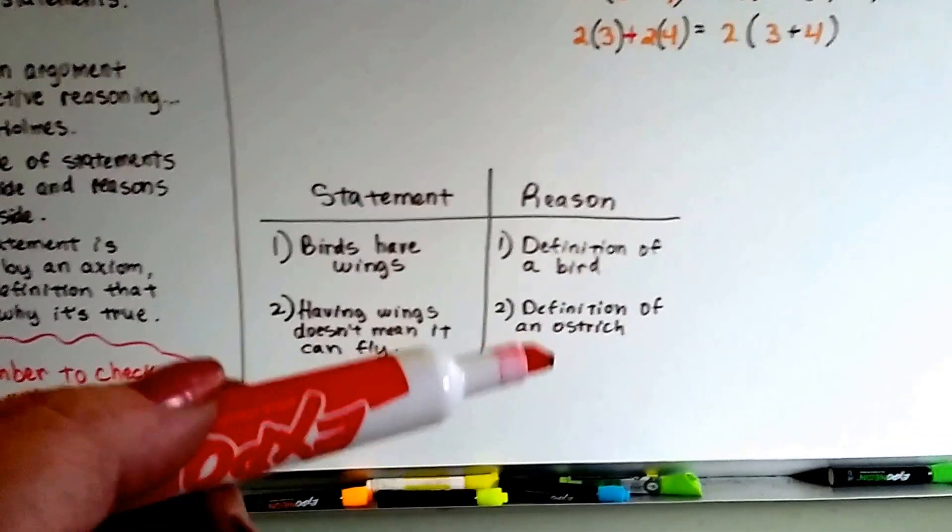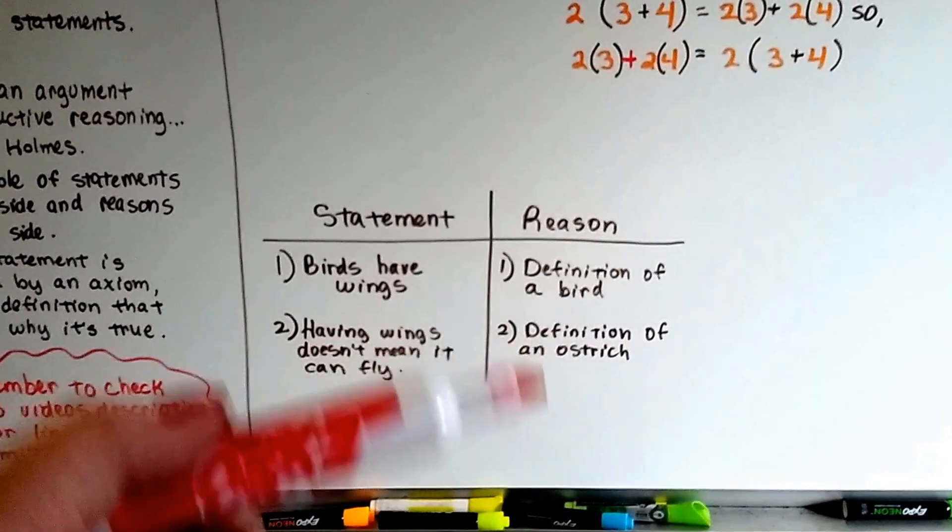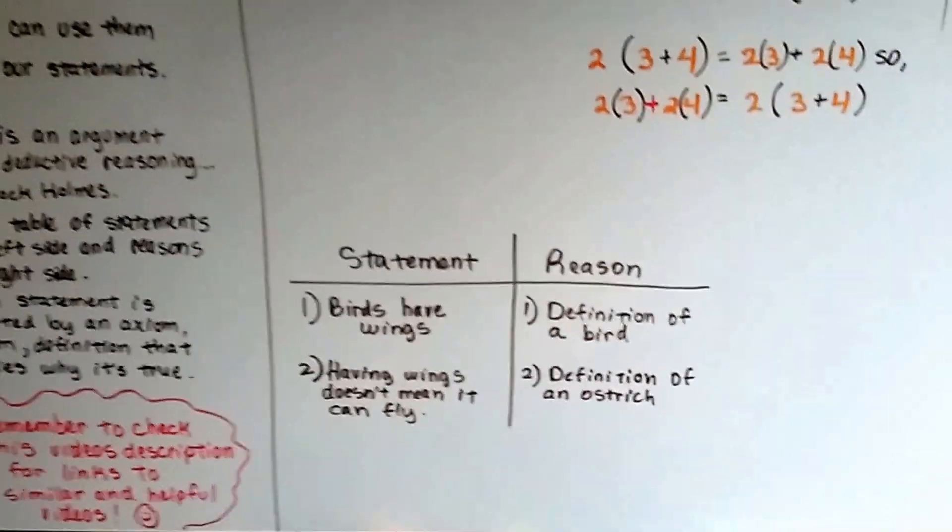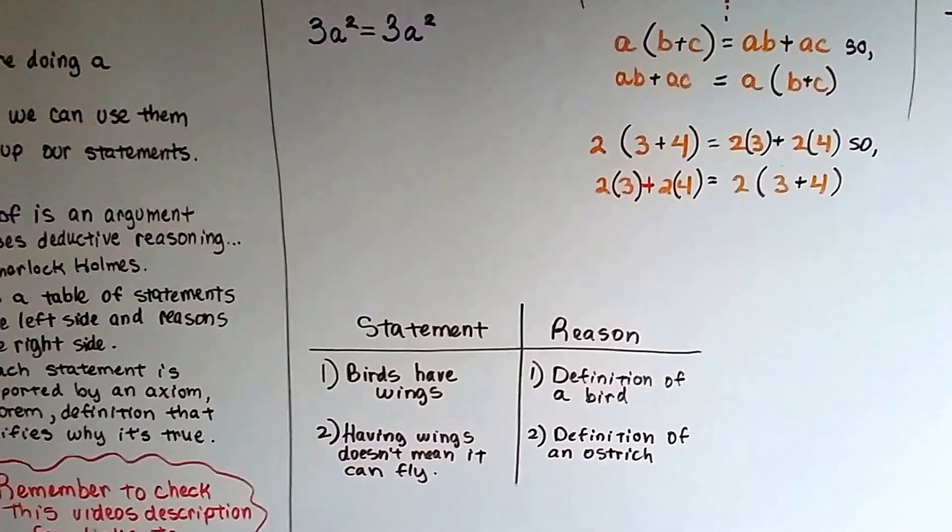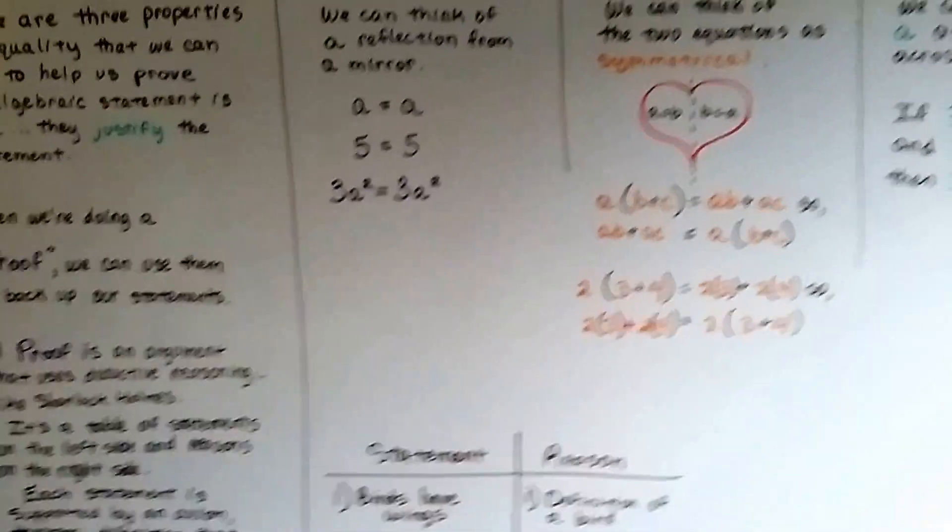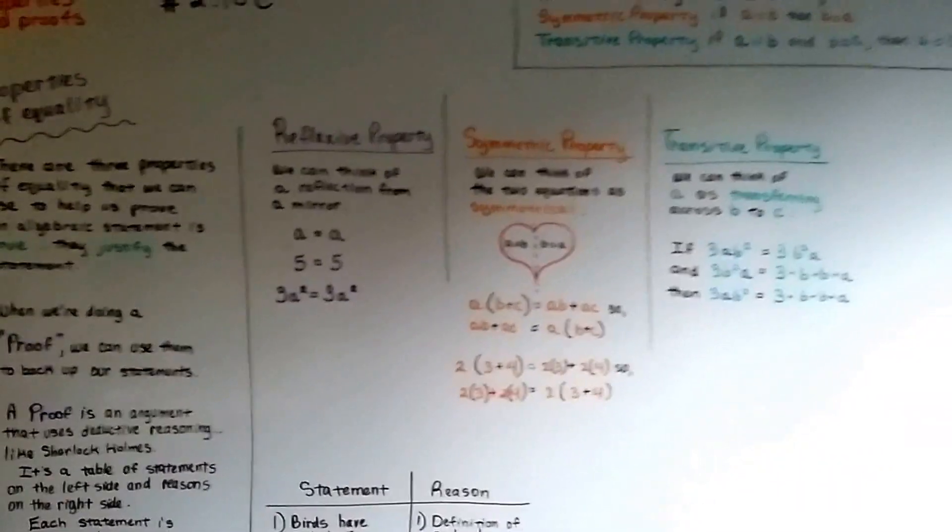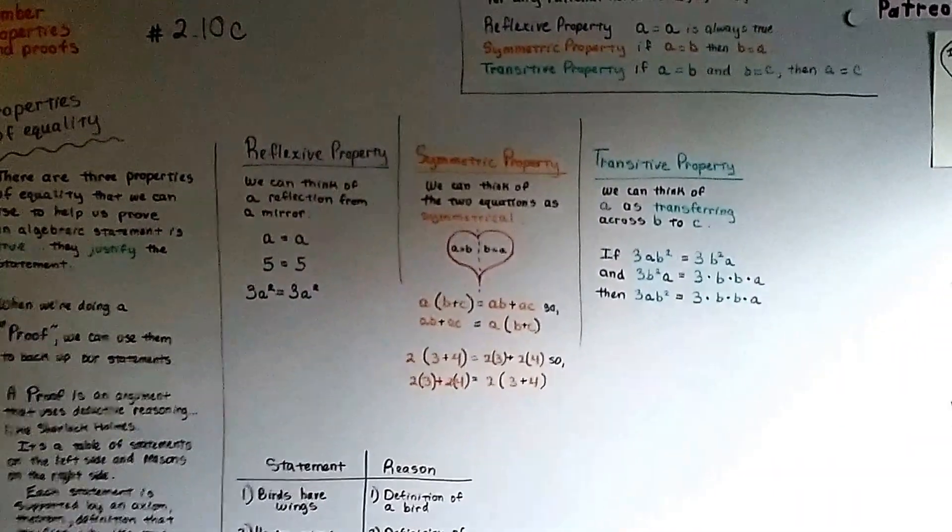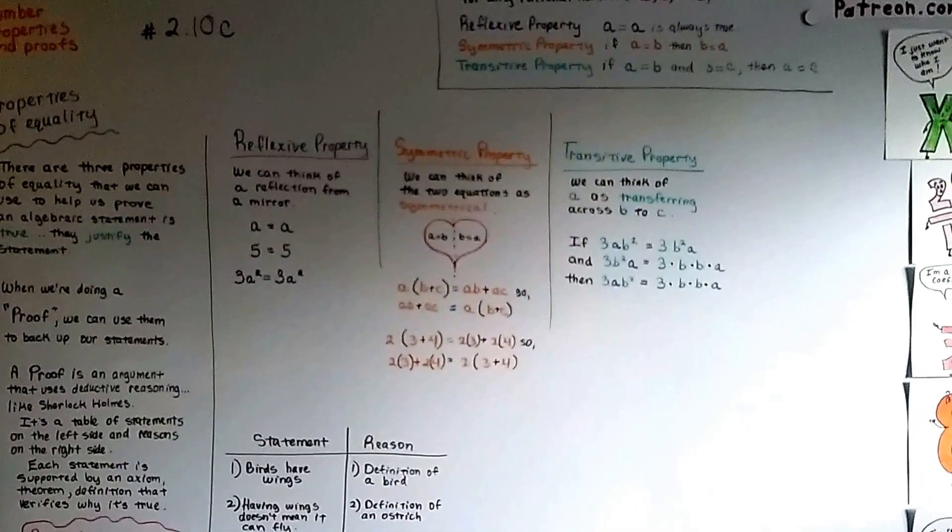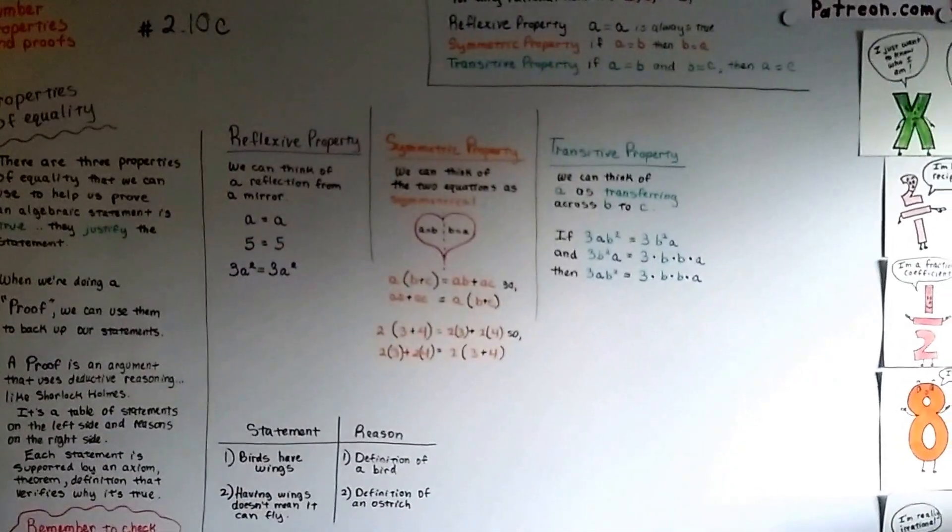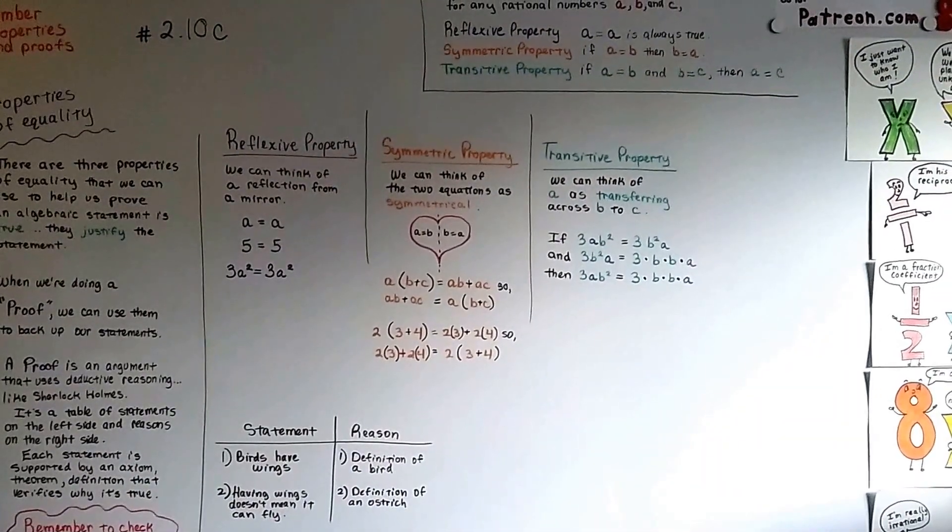But we would go further down and do deductive reasoning and use axioms, theorems, postulates, definitions. And we're going to talk about that in the next video. In 2.10d, we're going to talk about theorems and proofs. And then we'll be at the end of the chapter. Bye.